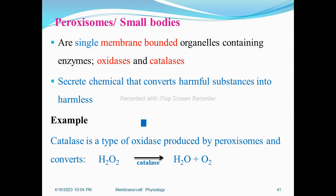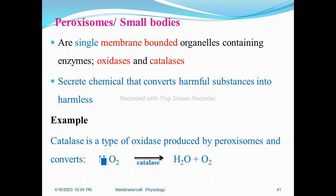Peroxisomes are small bodies — single membrane-bound organelles containing enzymes like oxidase and catalase. They convert harmful substances, and produce hydrogen peroxide which is then converted. This process is important for detoxification.